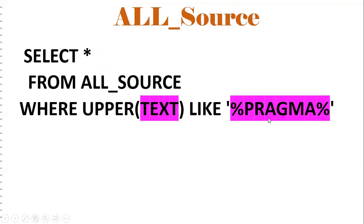For example, if you want to find wherever the PRAGMA keyword appears in a function, procedure, or package, you can use: SELECT * FROM ALL_SOURCE WHERE UPPER(TEXT) LIKE '%PRAGMA%'. This converts the text to uppercase and searches for PRAGMA, listing all objects that contain that keyword. This is very useful in real time.